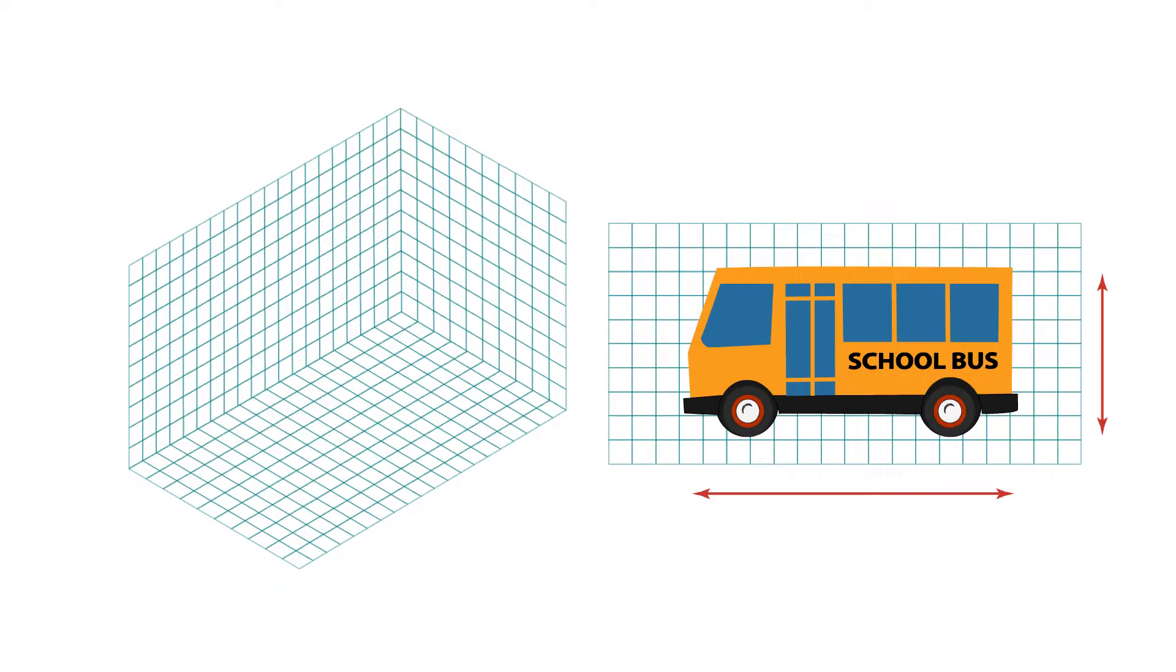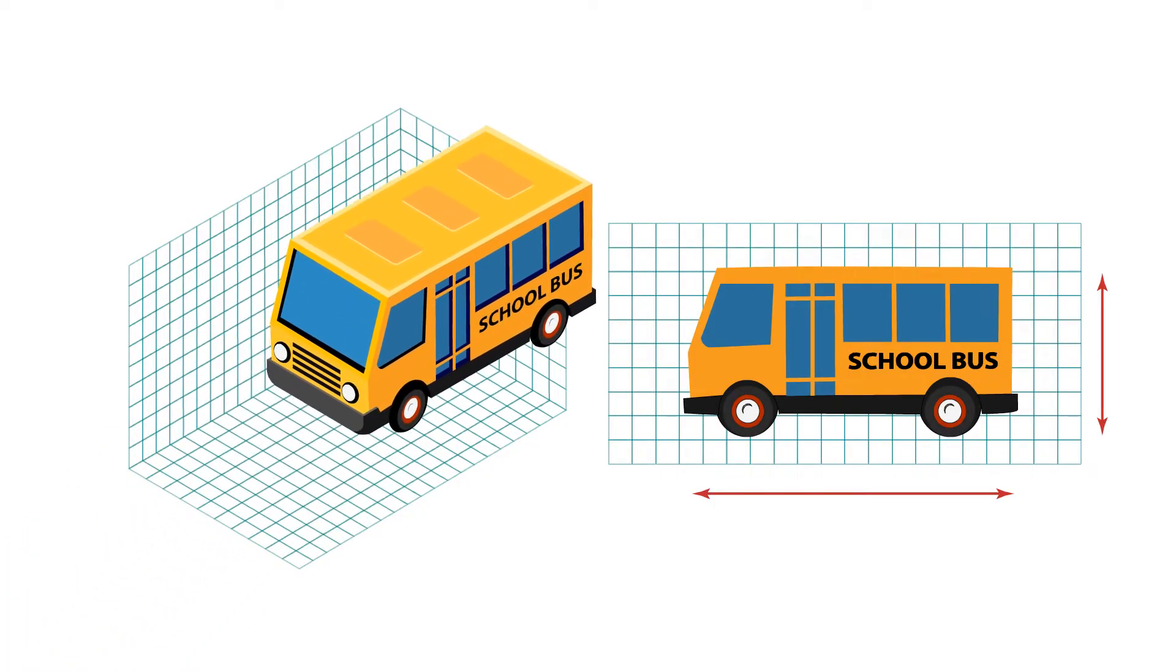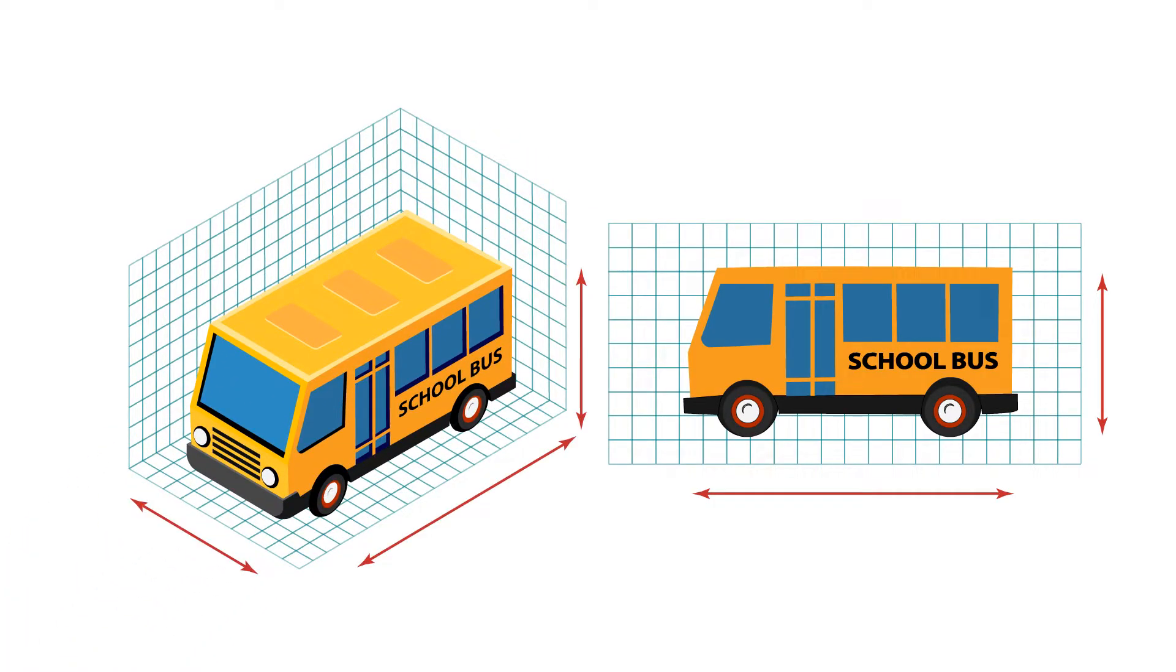A three-dimensional figure has three dimensions: length, width, and height. These dimensions are used to find the volume of the figure, or the space the figure occupies.